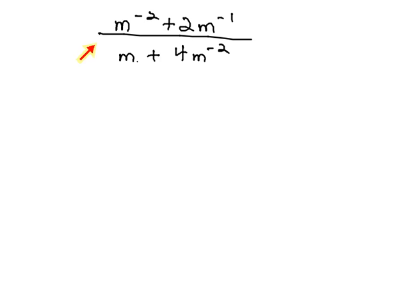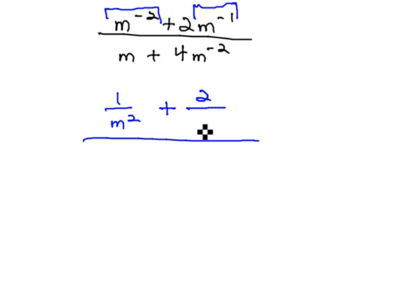Because we have terms in this problem, what we're going to have to do is just look at the m to the negative 2 by itself and make it its own reciprocal, a little fraction sitting on top here, 1 over m squared. Plus, similarly, the negative 1 exponent's gonna make a fraction, but be very careful here to remember that negative 1 is only on the m. The 2 stays in the numerator and the m moves to the denominator.